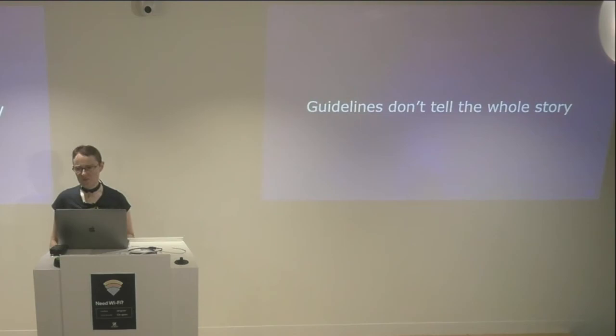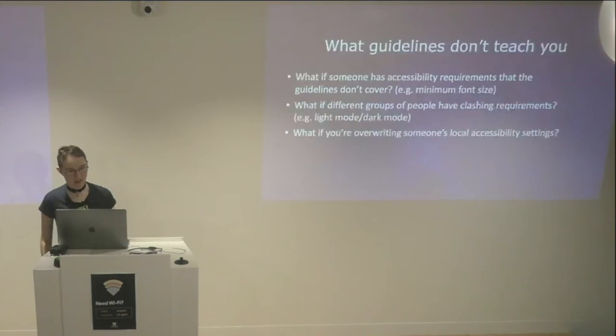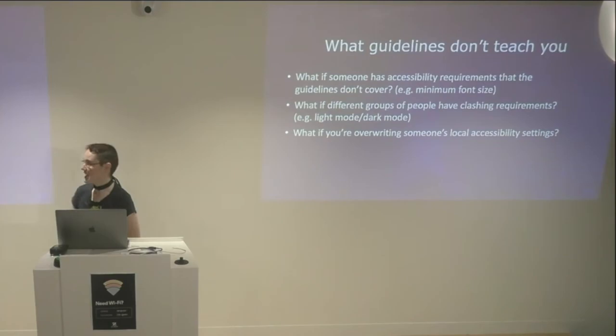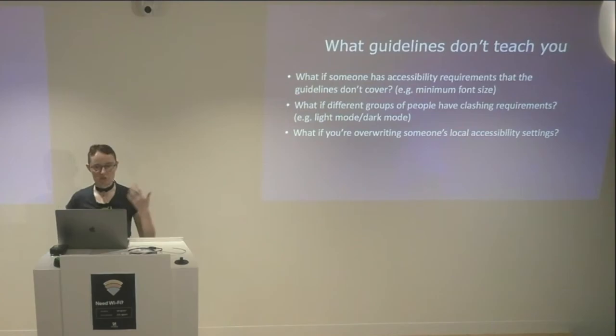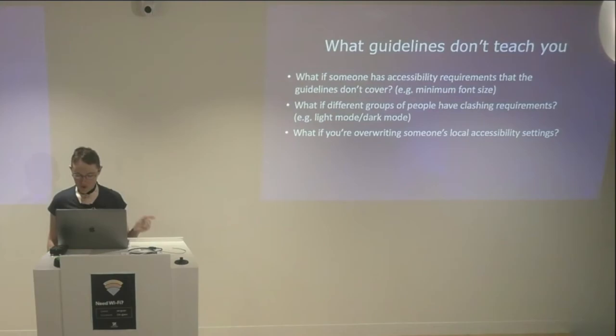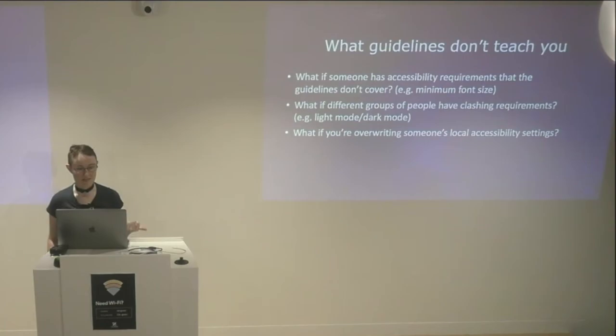Guidelines are great, but unfortunately when we're dealing with accessibility, one of the issues is that guidelines don't actually tell the whole story. One thing that really irritates me about the Web Content Accessibility Guidelines is that they don't cover all accessibility requirements — namely, minimum font size on a web page. They have recommendations about how big font should be and say you should be able to zoom it up to 200 times, but if you're giving me a six-point font and telling me to zoom that up 200 times, 200 times six-point is still pretty small.